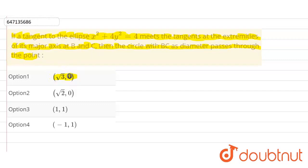Option 1, under root 3, 0. Option 2, under root 2, 0. Option 3, 1, 1. And option 4 is minus 1 and 1.